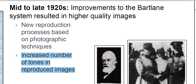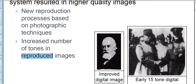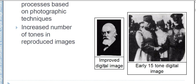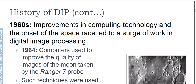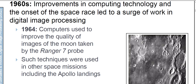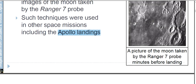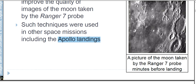These improvements increased the number of tones in the reproduced image — even then, efforts were being made to enhance images, moving from 15 to 16 tones. In the 1960s, improvements in computing technologies and the onset of the space race led to a surge of work in digital image processing. In 1964, computers were used to improve the quality of images of the moon taken by the Ranger 7 probe, and these techniques were also used in other space missions including the Apollo landing missions.